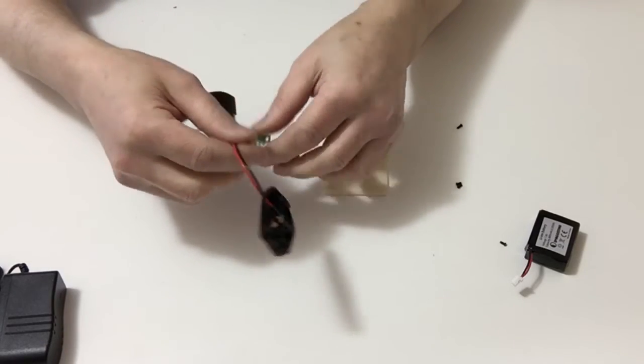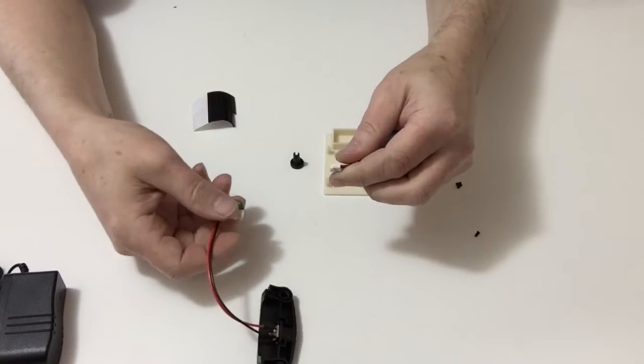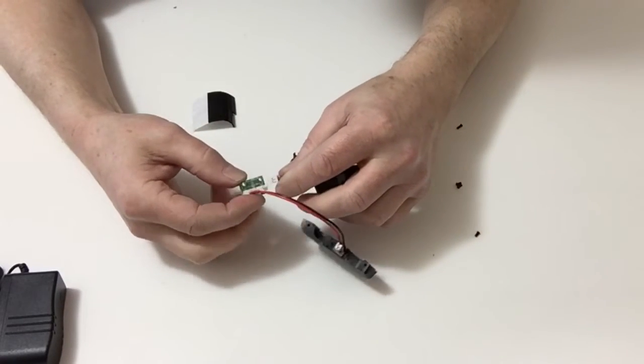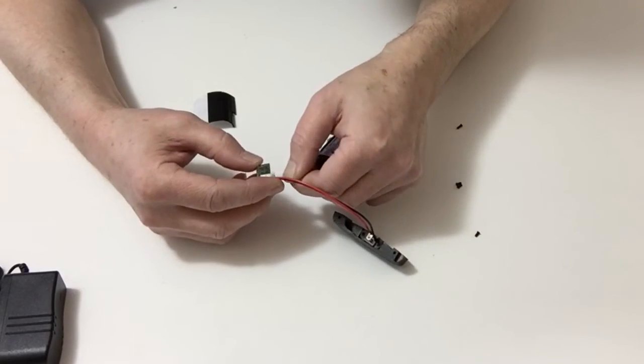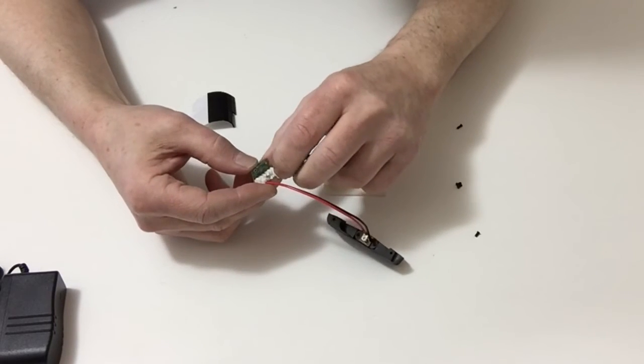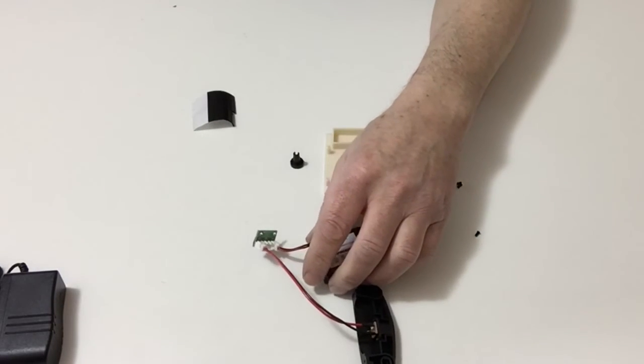Once you have done that, we then take the battery and that goes into CN3, which is connector 3. Once again, plug that into position.